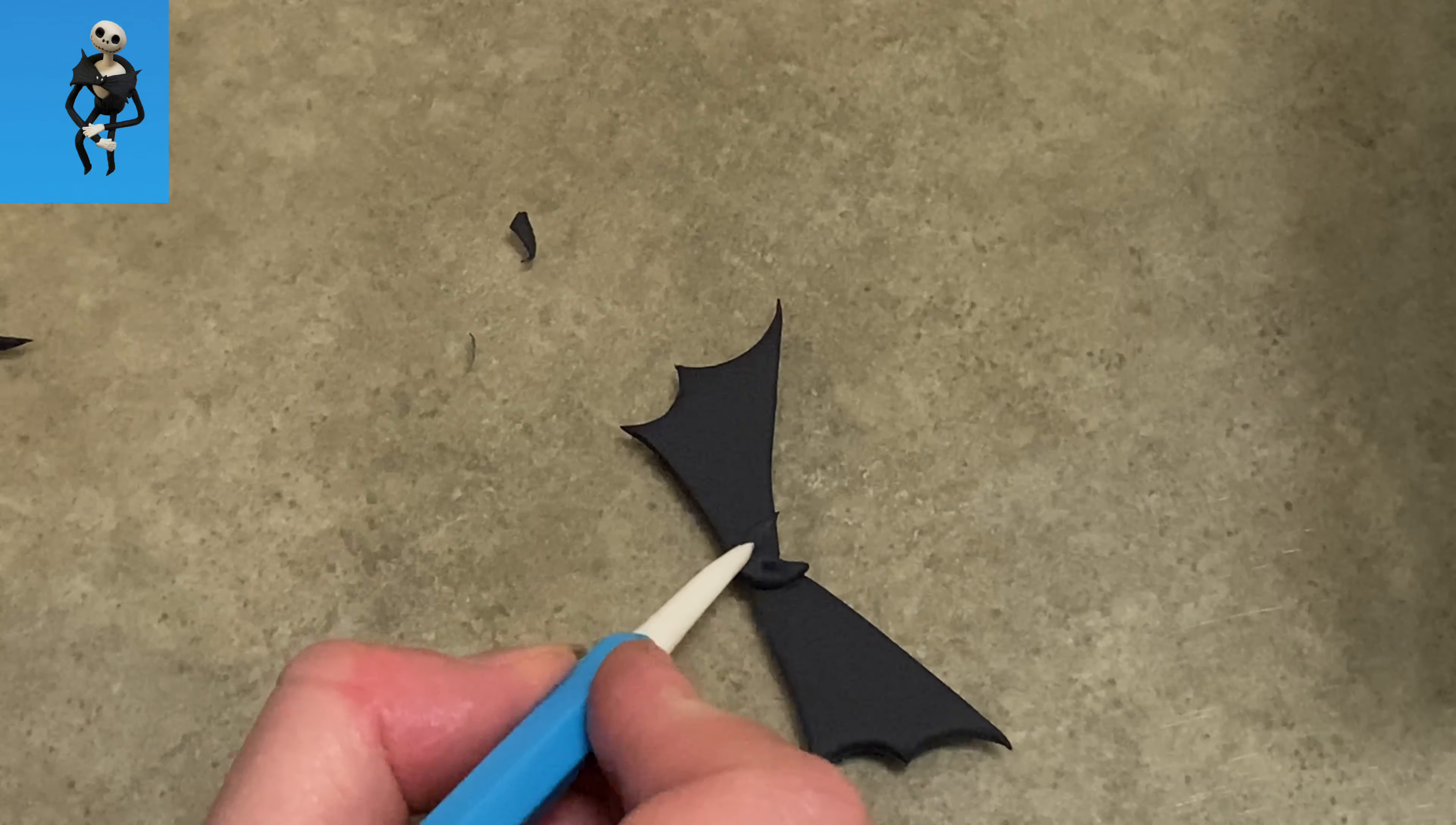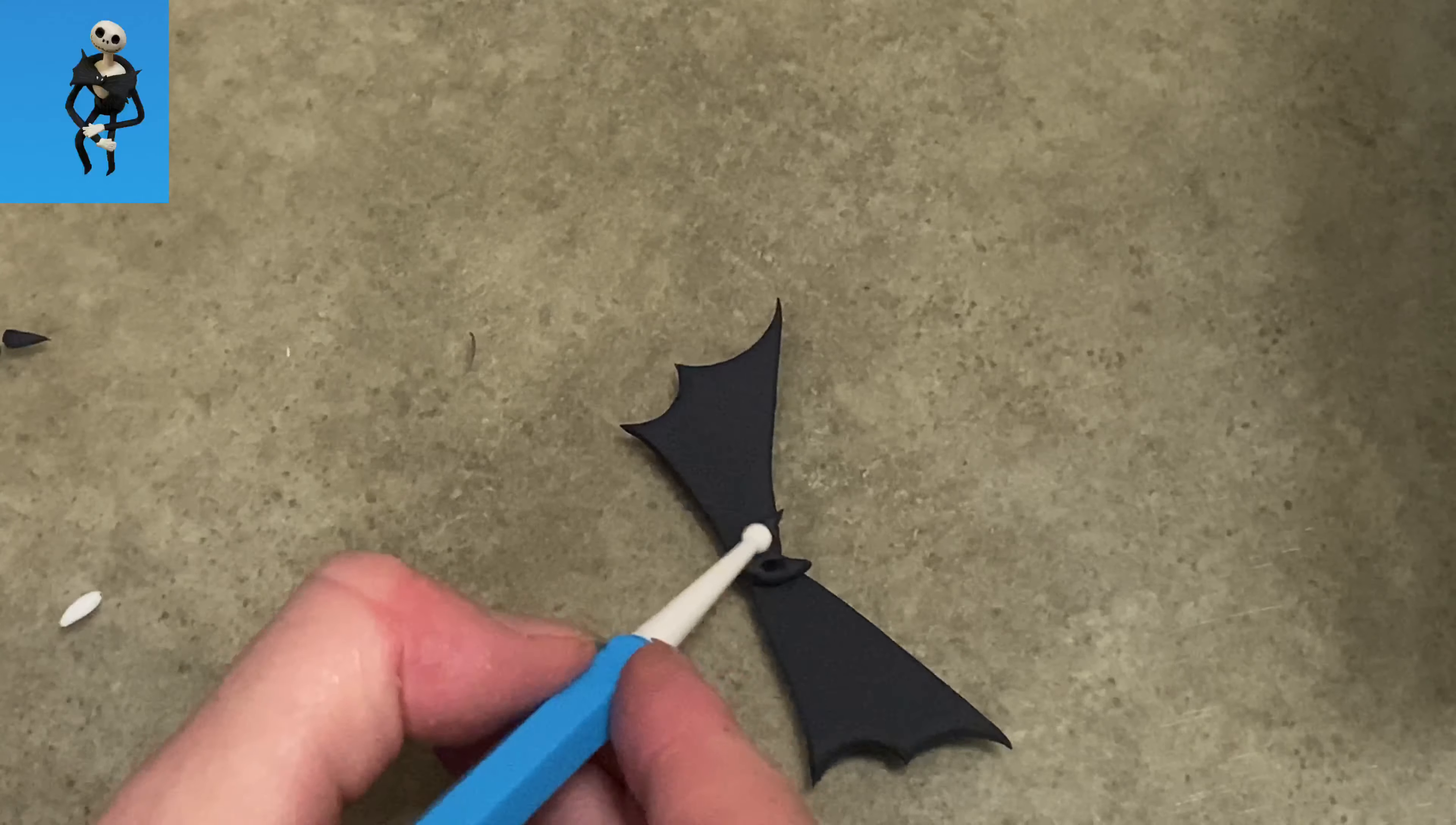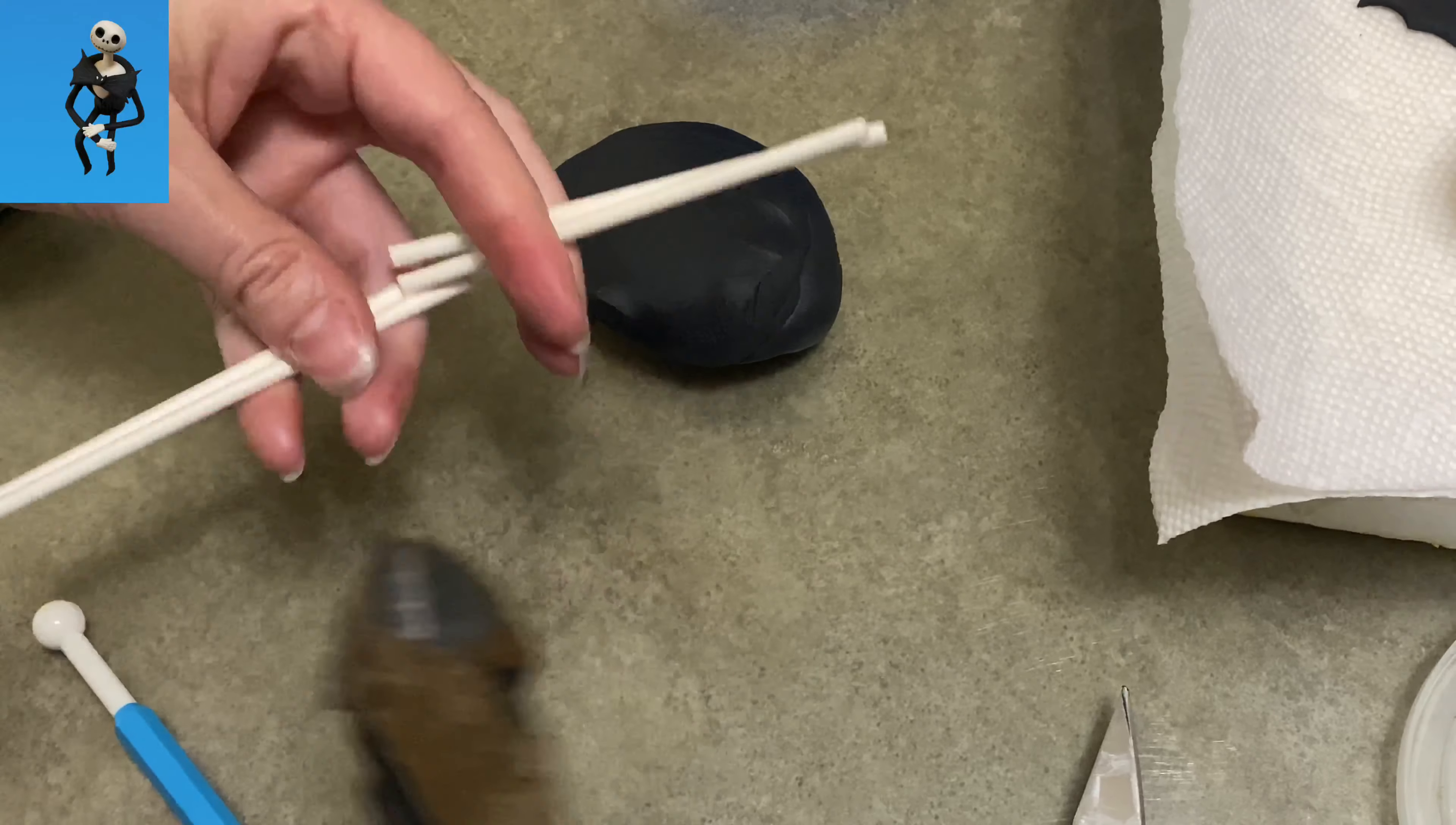Now I'm going to use my veining tool here, the little very pointy part, to make a couple little ovals, and those are going to be the eyes. I'm going to fill them in with a little bit of white gum paste, and then we're going to put this aside to let it dry. Do not put it on him yet, because we want those wings to stick out.